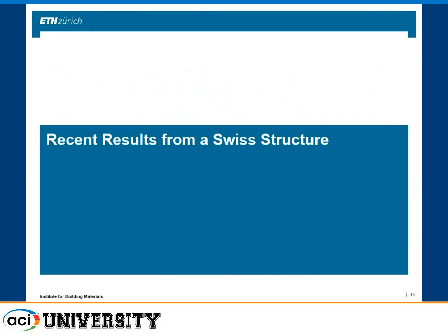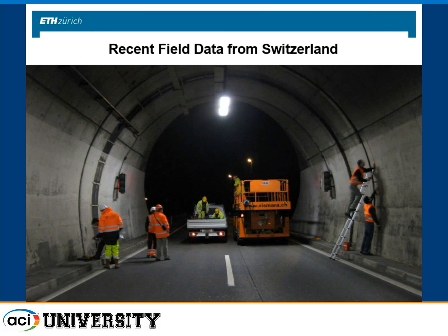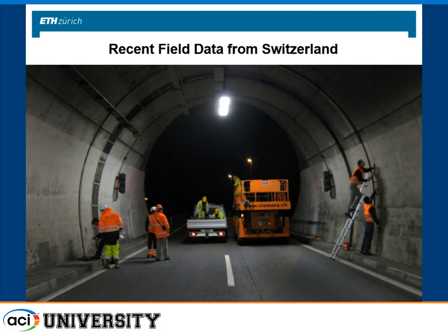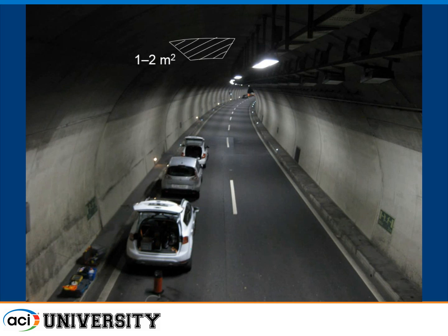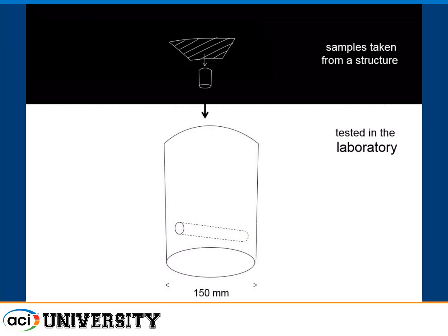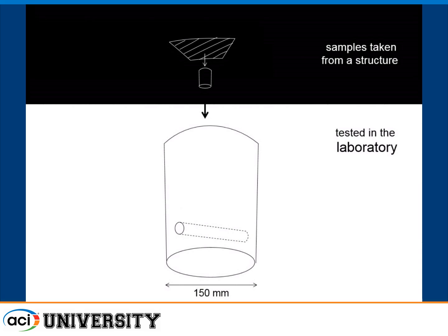I will now show some recent results from a Swiss structure — a tunnel right south of the Gotthard Road tunnel. During condition assessment, we could take drill cores from a very small surface area of one to two square meters. From within that area, we took 21 concrete cores, each containing a piece of reinforcing steel. These cores have a diameter of 150 mm with one reinforcing steel bar embedded centrally, and we confirmed by condition assessment methods that these bars had not yet corroded.